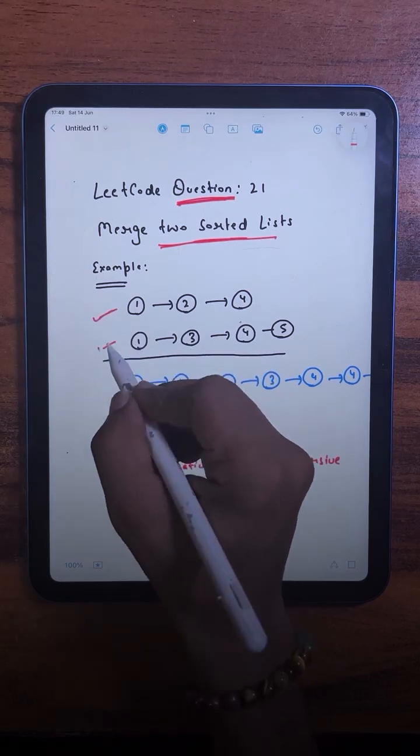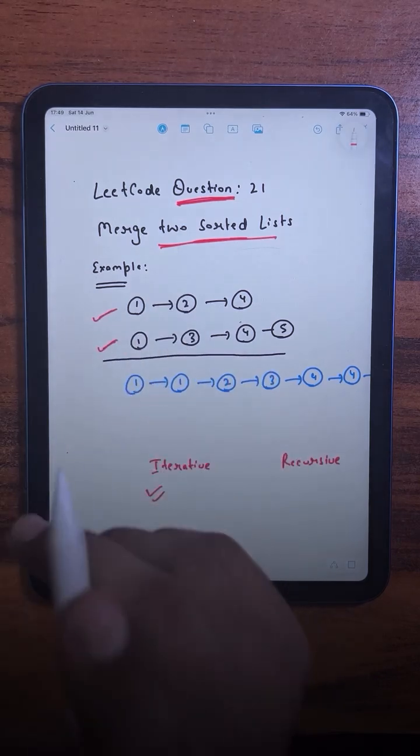Now let's see what the question is saying. We are given the heads of two sorted lists and our task is to return one single sorted list like this.